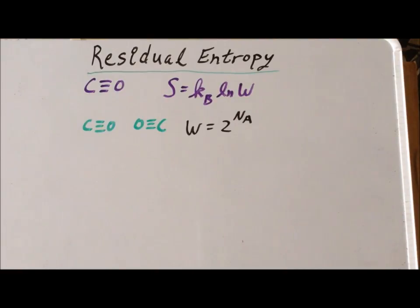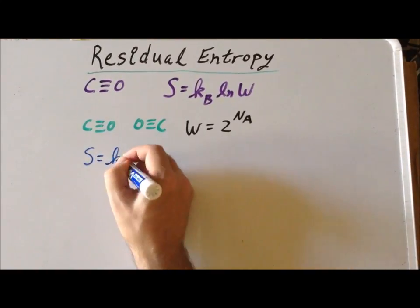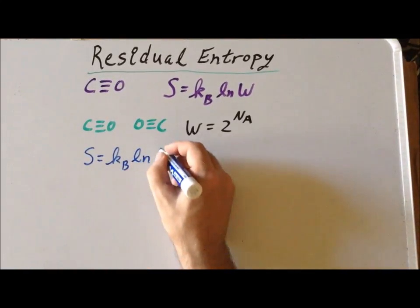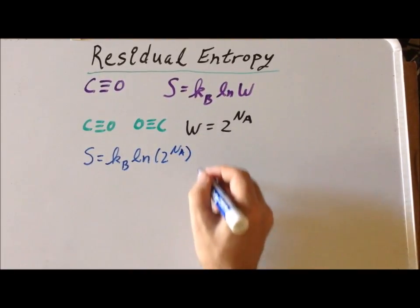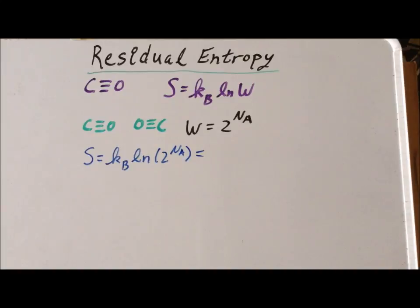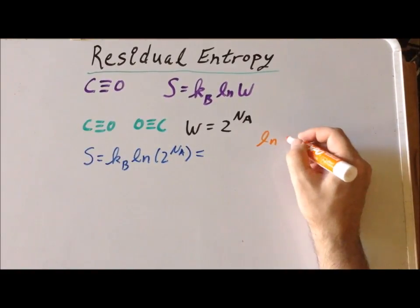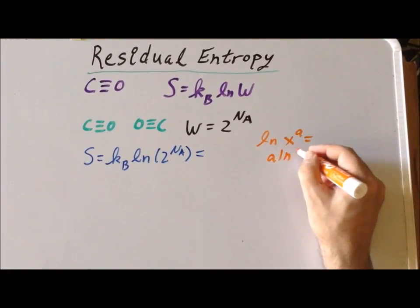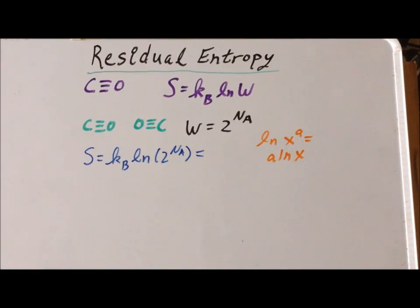So now we substitute this into the Boltzmann relationship. So we have the Boltzmann constant times the natural log of two to the Avogadro's number power. Again, we're going to use an important relationship of exponents, that the natural log of x to the a power is equal to a times the natural log of x. I can take a power and pull it in front of the natural log as a coefficient.